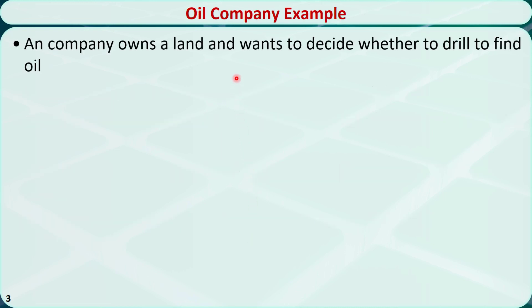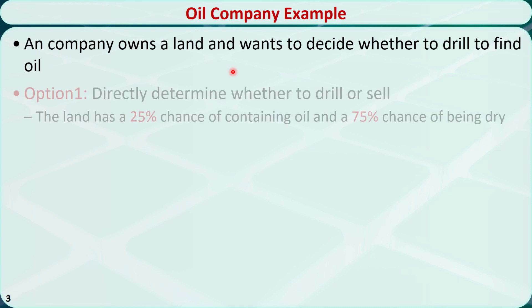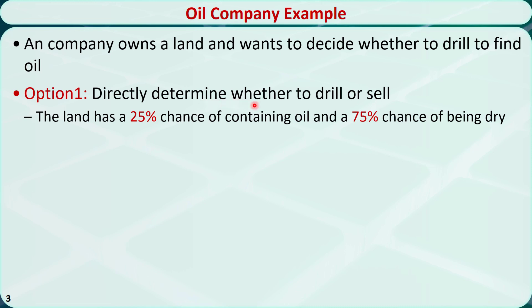Let's see an example. An oil company owns a land and wants to decide whether to drill to find oil. They have two options. Option 1: they can directly decide to drill for oil or decide to sell the land without drilling. Based on the information they have right now, the land has a 25% chance of containing oil and 75% chance of being dry — that means no oil.